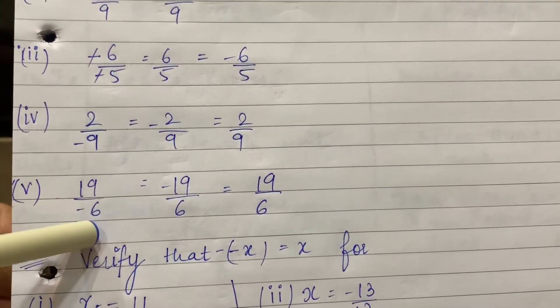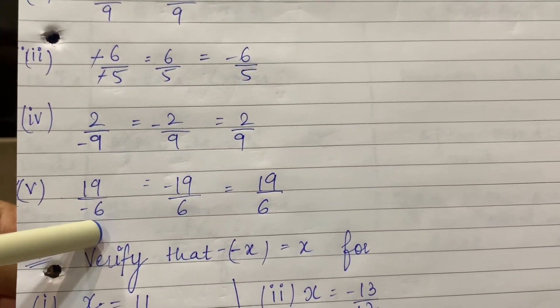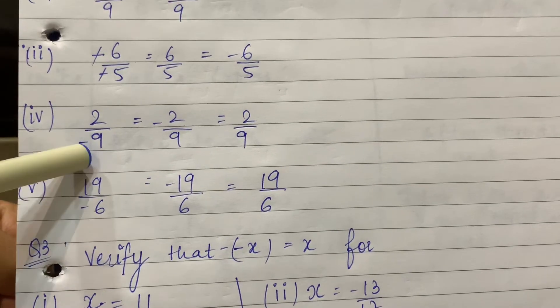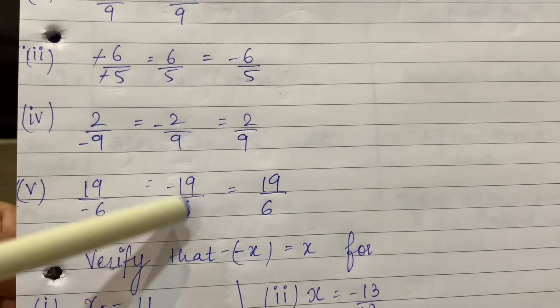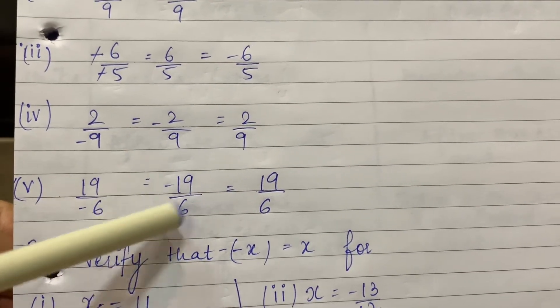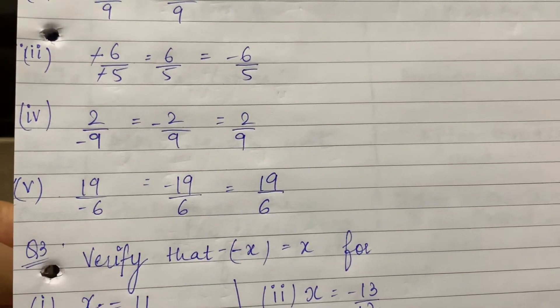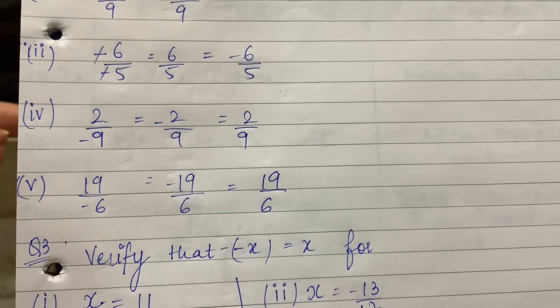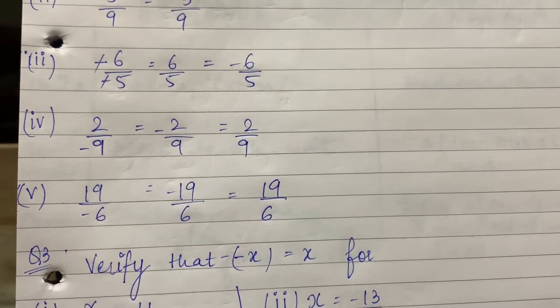Now 19 upon minus 6 — same sum. The minus goes up to the numerator, so it becomes minus 19 upon 6. Then its additive inverse will be 19 upon 6. This point is now completely clear.